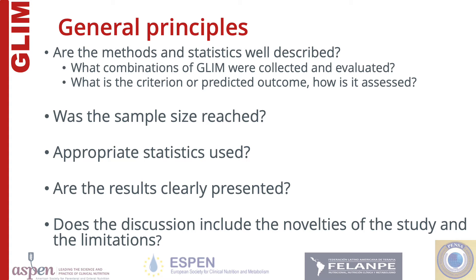For criterion validity, the criterion used should be clearly described. Unfortunately, some studies being published include a screening tool as the criterion, which is a significant flaw. As shown in Section 2 of this series, the optimal criterion is assessment by a professional in nutrition. Alternatively, Subjective Global Assessment, Patient-Generated Subjective Global Assessment, or the Mini Nutrition Assessment full form can be used. Consider whether the estimated sample size was reached and if the appropriate statistics were completed. For a refresher on appropriate statistics, review the Validation Guidance paper and the second presentation in this series.